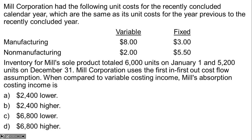This question is about the difference between variable and absorption income, and it's a very simple question once we identify what we need to do and filter out all the unnecessary information. Mill Corporation had unit costs for the recently concluded calendar year that are the same as the unit costs for the previous year — meaning costs haven't changed; what they are this year is what they were last year.